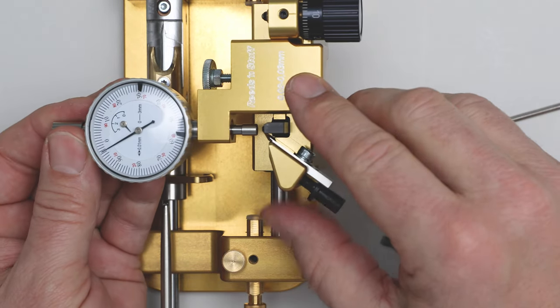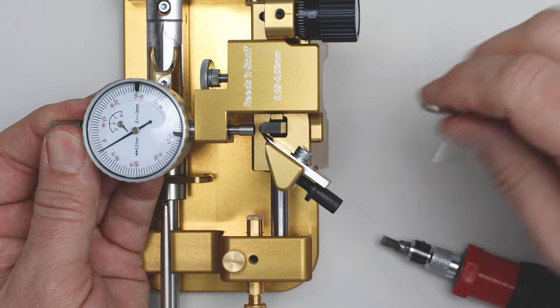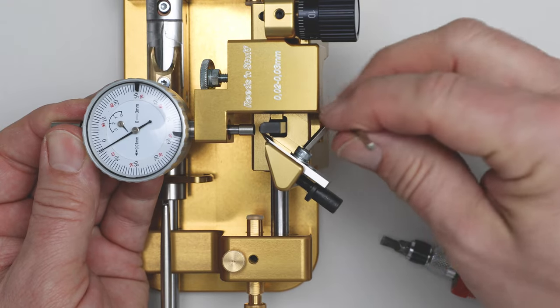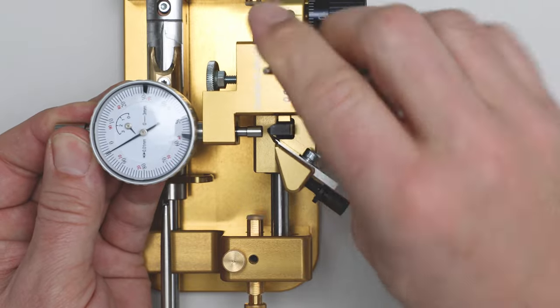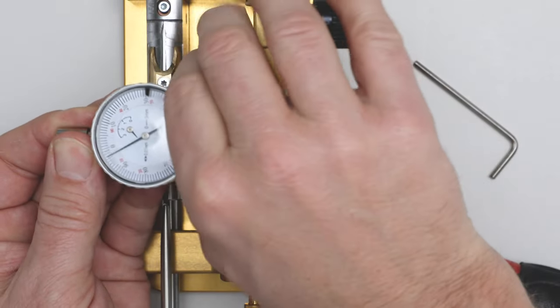I lift up the axle to prevent the blade from being damaged, lock this screw, and take off the dial indicator.